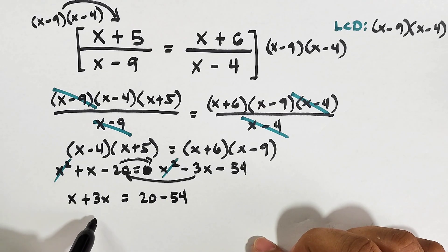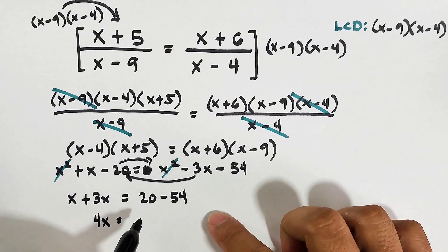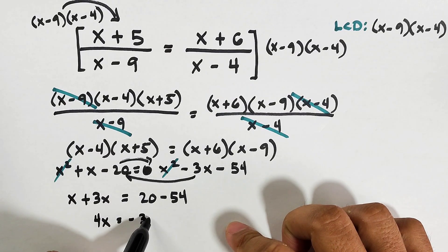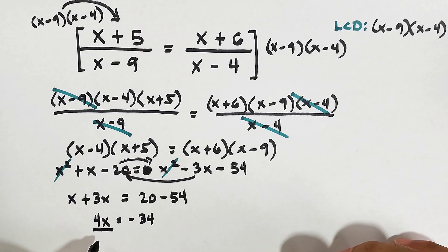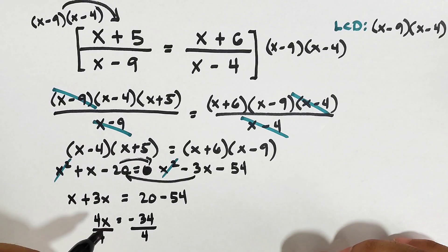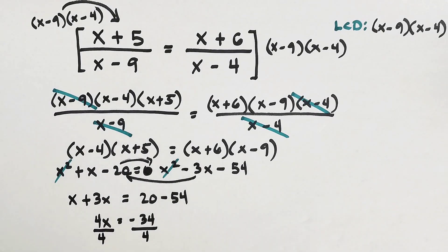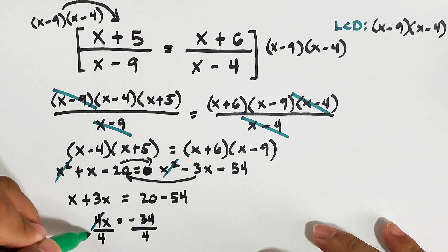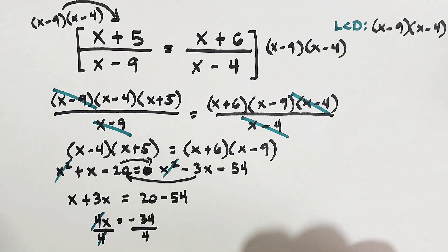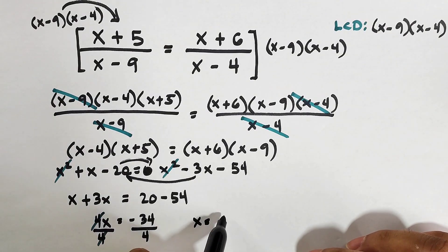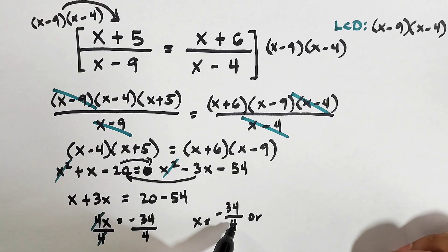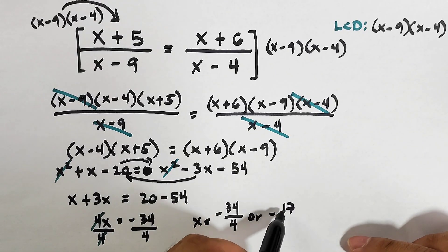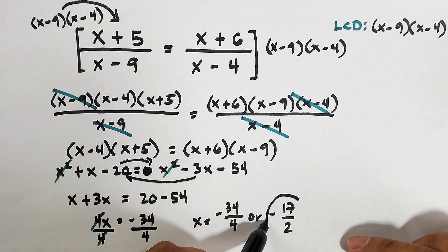We have 4x equals negative 34. We will divide both sides by 4. This gives us x equals negative 34 over 4, or simplified, negative 17 over 2. And this is the value of x.